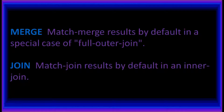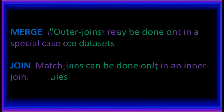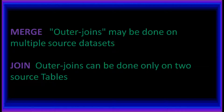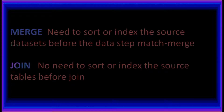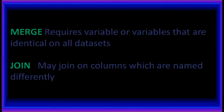JOIN MATCH JOIN results by default in an inner join. MERGE outer joins may be done on multiple source datasets; JOIN outer joins can be done only on two source tables. MERGE requires sorting or indexing the source datasets before the data step match. JOIN has no need to sort or index the source tables before joining.